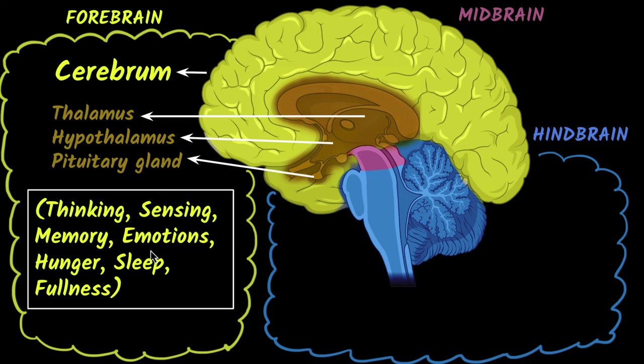Other things like your hunger, your sleep, and the feeling of fullness that you get after you eat something — all these are the stuff that your forebrain controls. So these are all the functions of your forebrain.